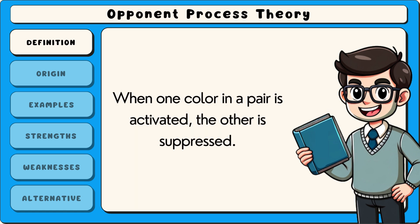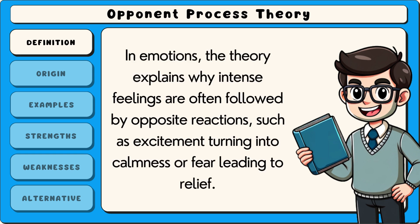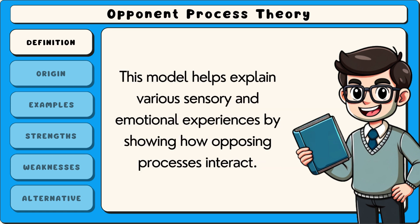When one colour in a pair is activated, the other is suppressed. In emotions, the theory explains why intense feelings are often followed by opposite reactions, such as excitement turning into calmness or fear leading to relief. This model helps explain various sensory and emotional experiences by showing how opposing processes interact.